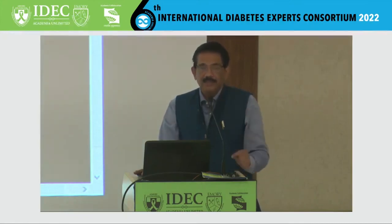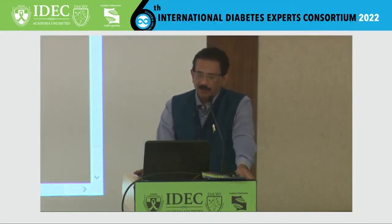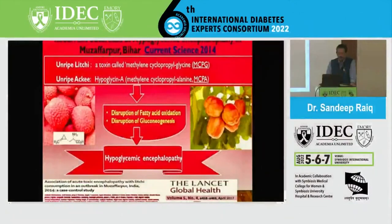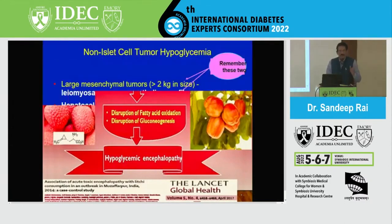This is the lychee crisis at Muzaffarpur in Bihar — people were going into hypoglycemic encephalopathy in 2014. They found out that unripe lychee had a toxin called MCPG, and this was leading to hypoglycemic encephalopathy. This was published in The Lancet.